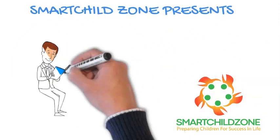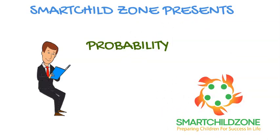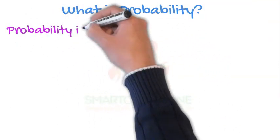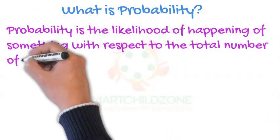Smart Child Zone presents Probability. What is probability? Probability is the likelihood of something happening with respect to the total number of outcomes.